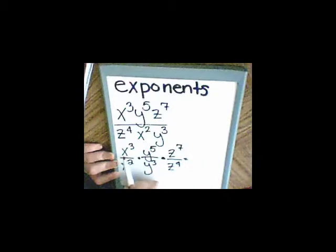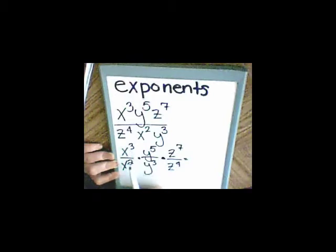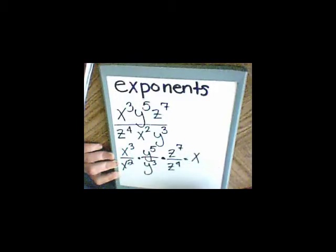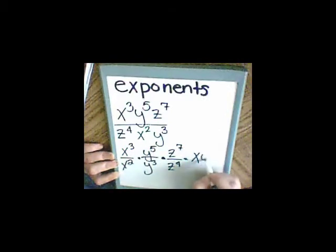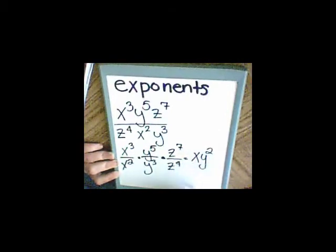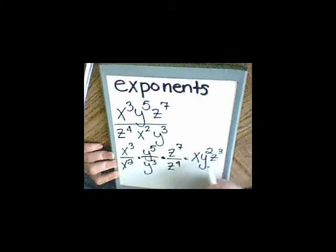x to the 3rd over x to the 2nd — when I divide exponents I subtract their powers, so 3 minus 2 is 1, giving me x to the 1st or just x. 5 minus 3 is 2, so y to the 2nd. 7 minus 4 is 3, so z to the 3rd. And that's my answer.